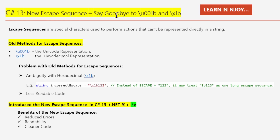C# 13 new escape sequence — say goodbye to older escape sequences like \u001b and \x1b. First, let's quickly understand what an escape sequence is. In programming, escape sequences are special characters used to perform actions that can't be represented directly in a string. For example, if you want to change text color or format, you cannot do it directly — that's where escape sequences come in. They are often used in terminal applications, and a console application is one type of terminal application.